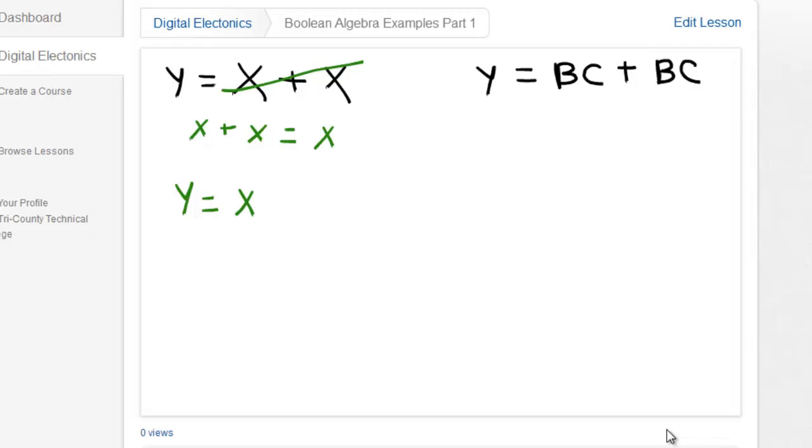similarly, if we look at this rule and we're still using our x or x is equal to x. Now we're just letting this piece be x. So I have two exactly identical pieces. So that means that that's going to be y is equal to bc.